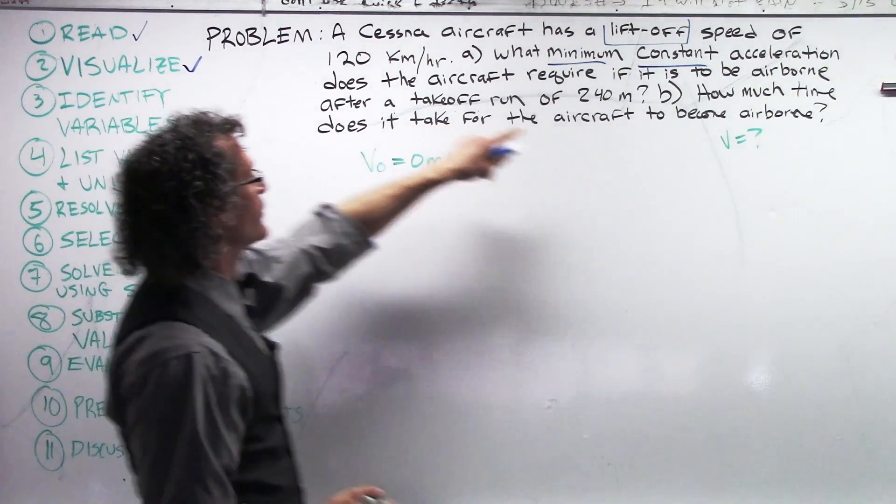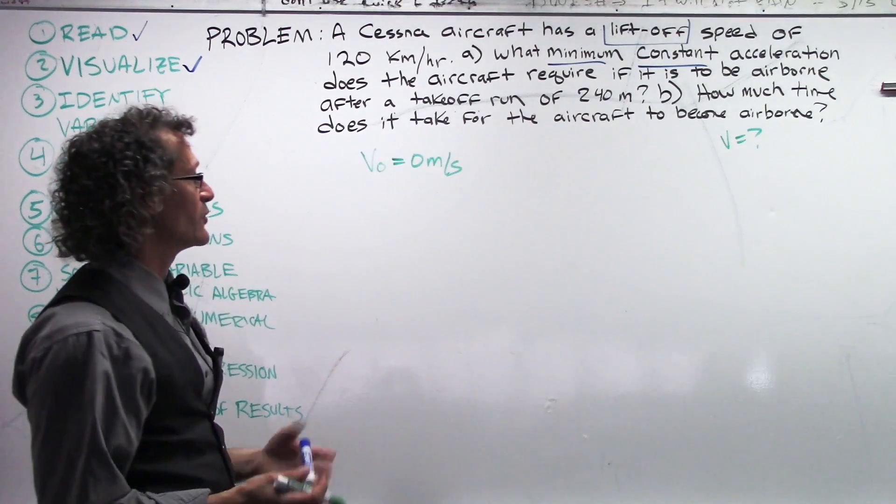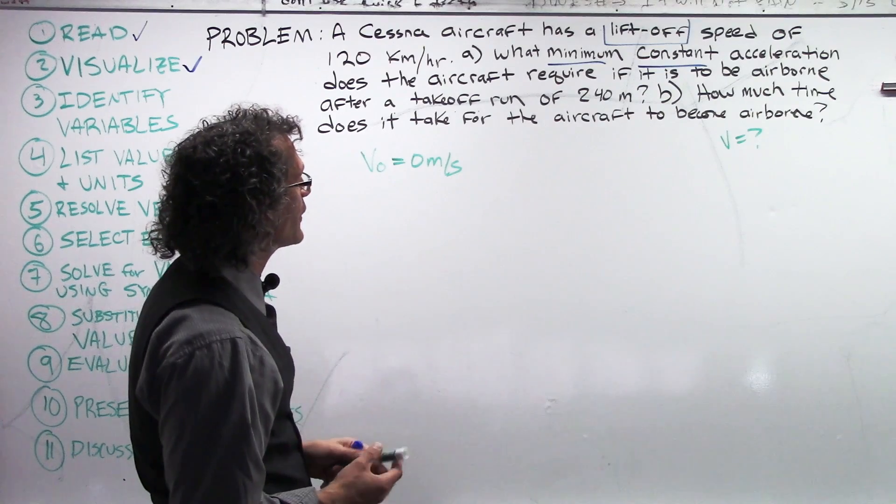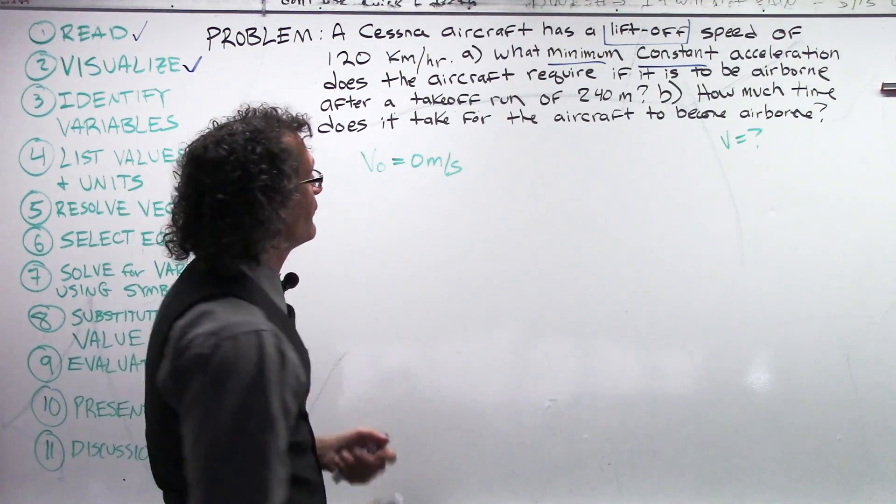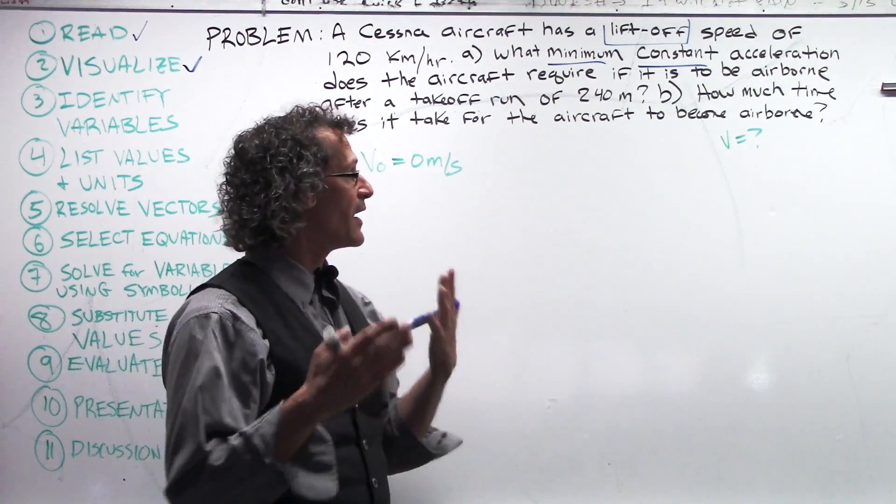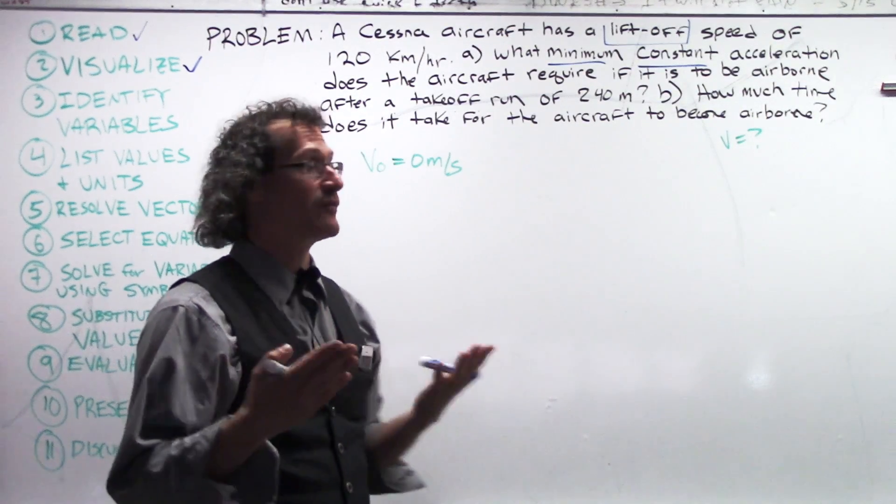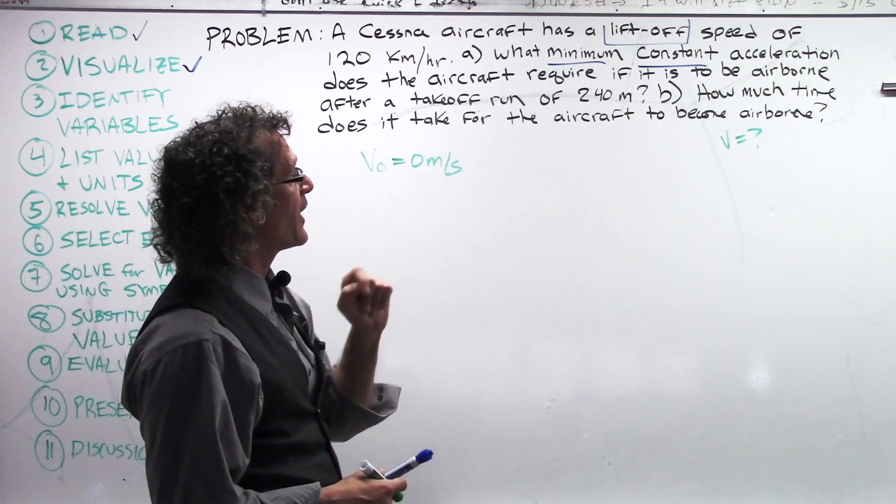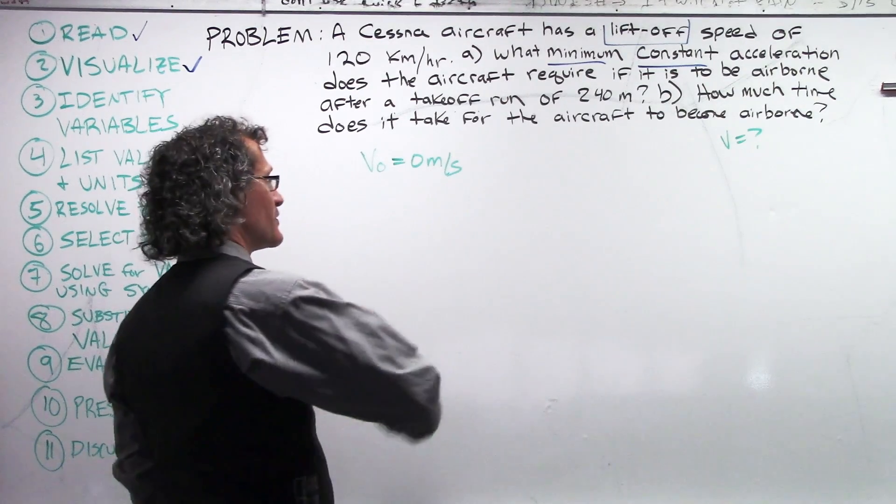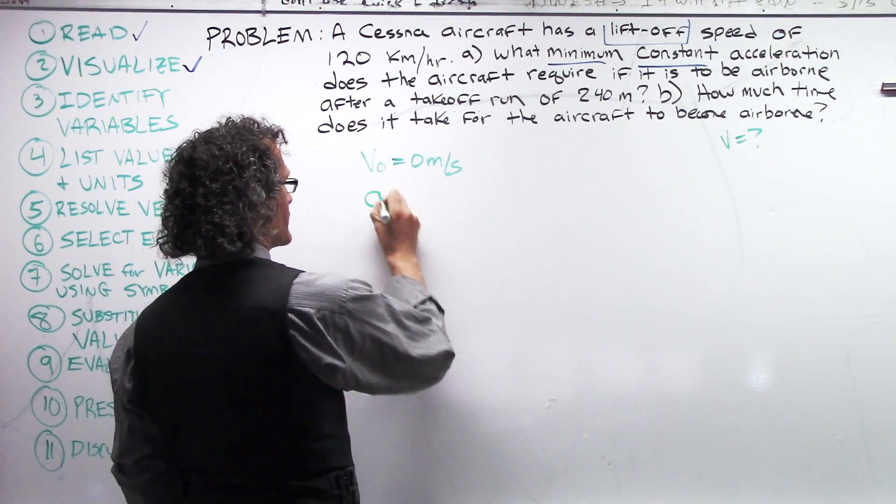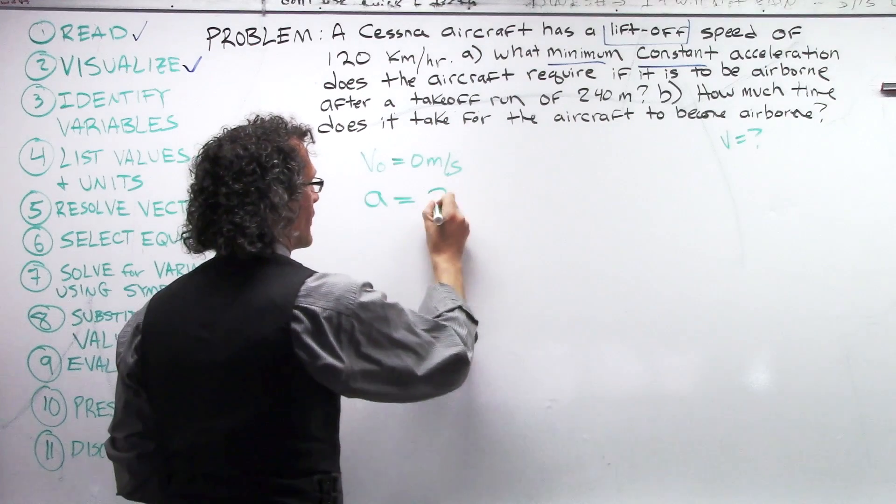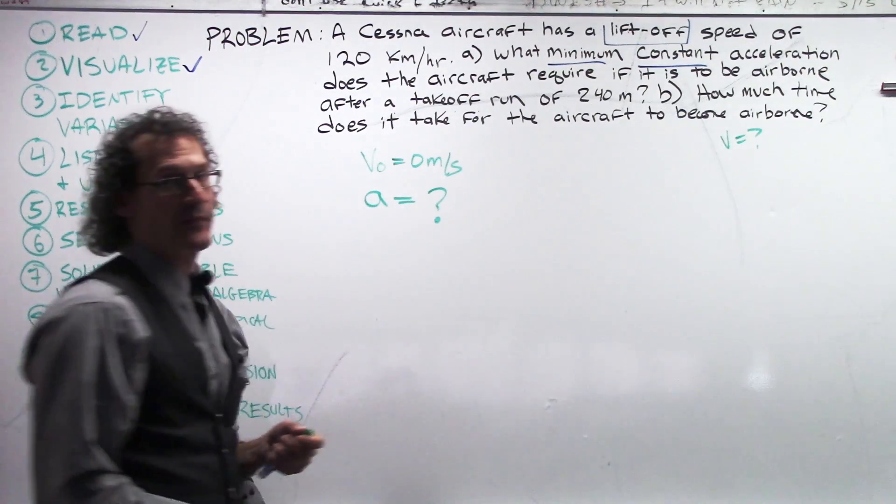As suggested before from reading this liftoff situation, our V0, original speed, zero meters per second. Now, when we identify variables, it does help, though, to look at the questions and look at what variables are being asked for. Well, in part A, what minimum constant acceleration does the aircraft require? That means that's something we're going to seek. We want to figure out A. So, A is who knows what. That's what we're going to find out.